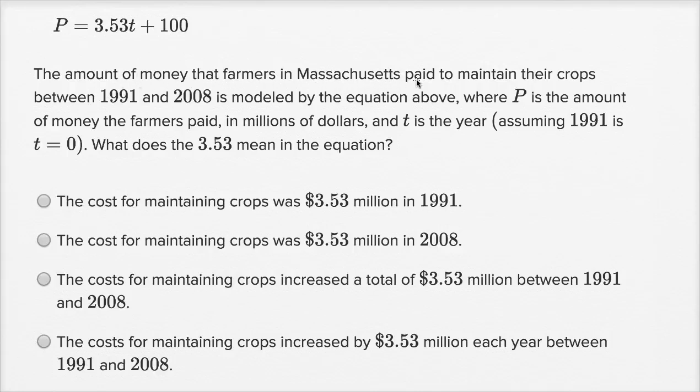The amount of money that farmers in Massachusetts paid to maintain their crops between 1991 and 2008 is modeled by the equation above, where P is the amount of money the farmers paid in millions of dollars, and t is the year. Assuming 1991 is t equals zero, what does the 3.53 mean in the equation?